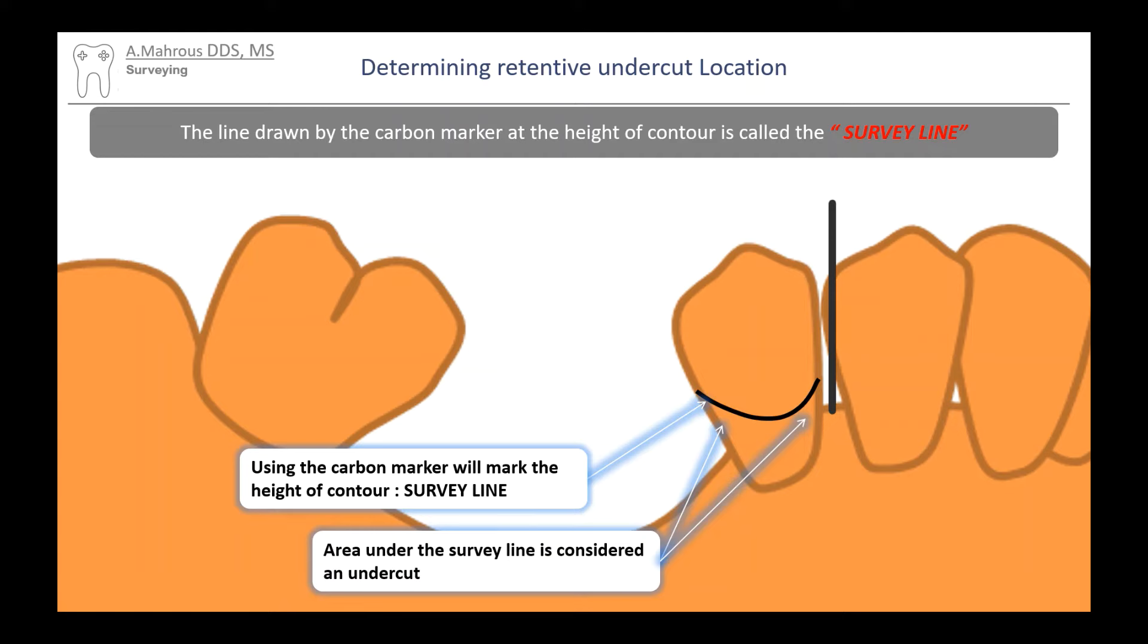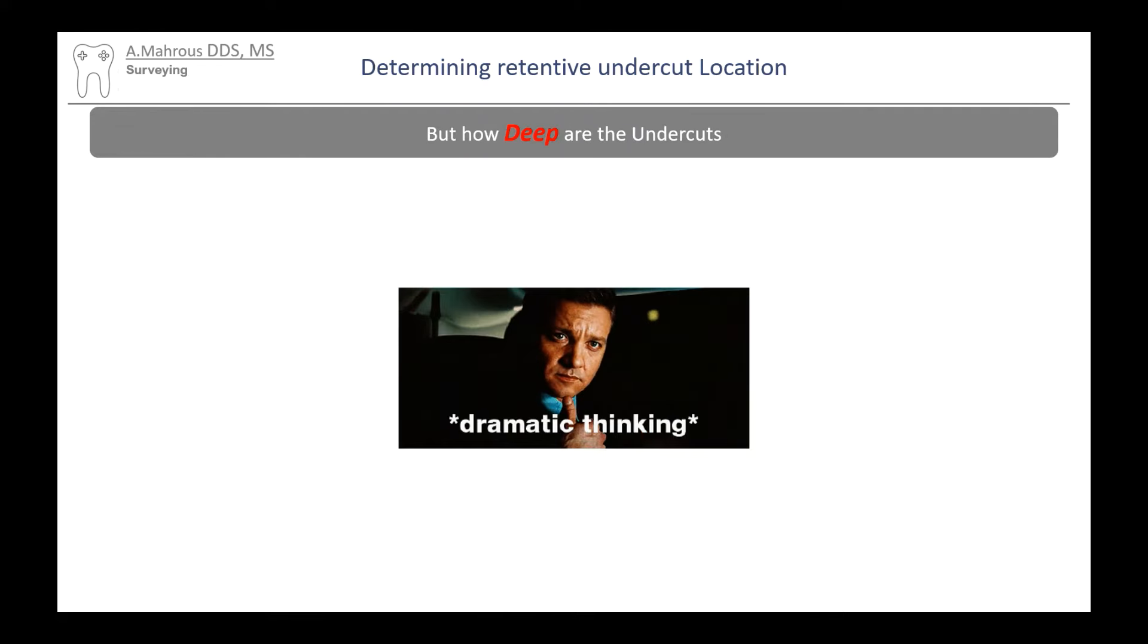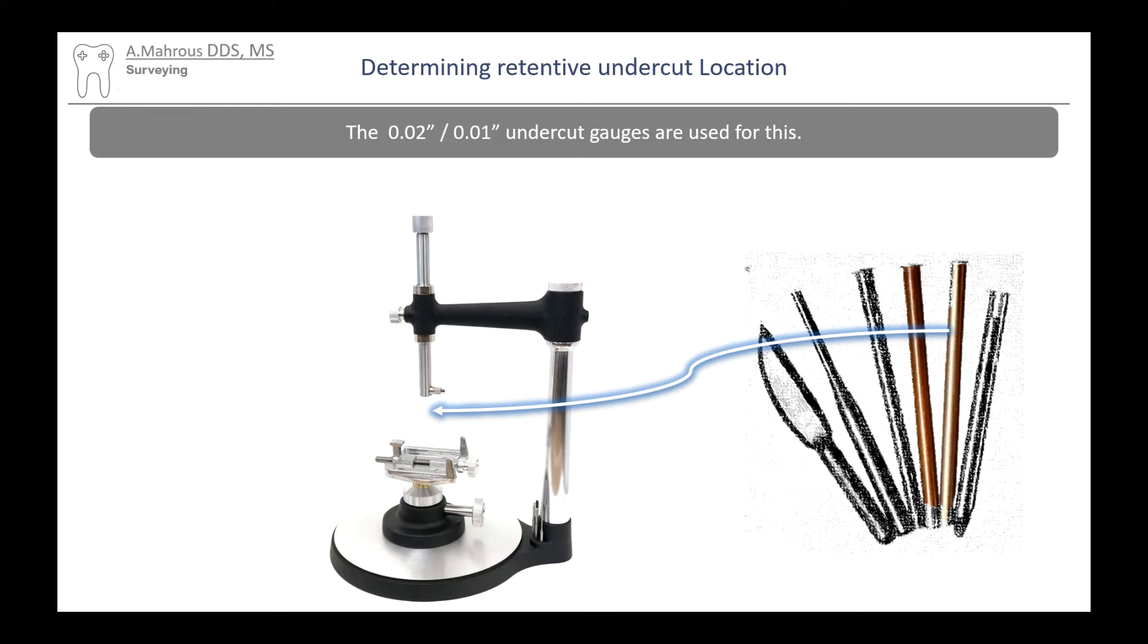Underneath the survey line are undercuts. But how deep are the undercuts, you ask? For that, we'll have to use undercut gauges. Typically, 0.02 and 0.01 undercut gauges are used.